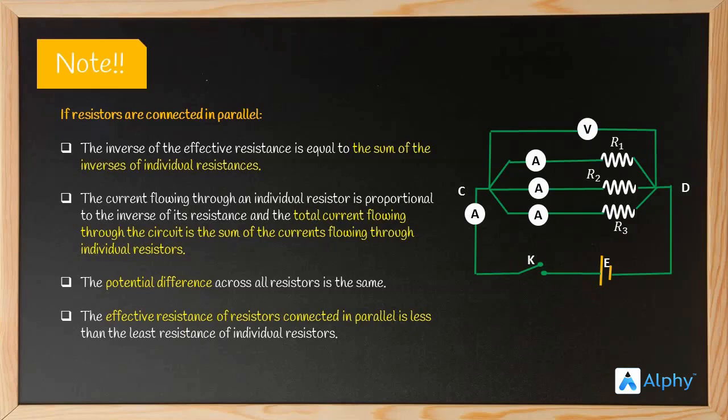So the effective resistance is reduced in a parallel connection. This arrangement is used to reduce the resistance of a circuit, and when resistance decreases, the current flow increases.